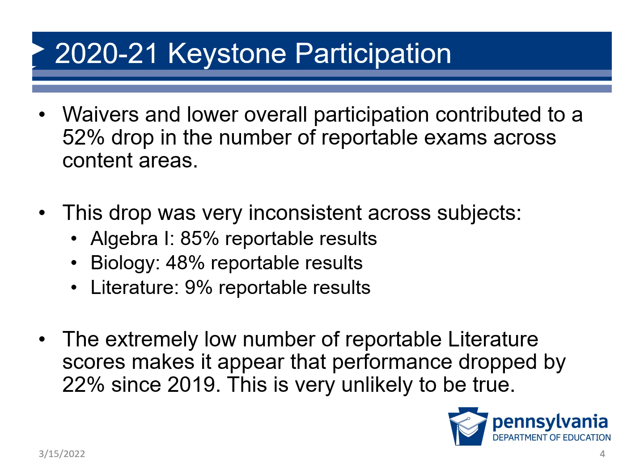Algebra 1 is split between many grades, including middle school grades in many schools. Thus, 85% of the students had reportable results as 11th graders in 2021. The extremely low number of reportable literature scores makes it appear that performance dropped by 22% since 2019. That is very unlikely to be true. Not only is the number reduced greatly, the representativeness of that sample is also different.